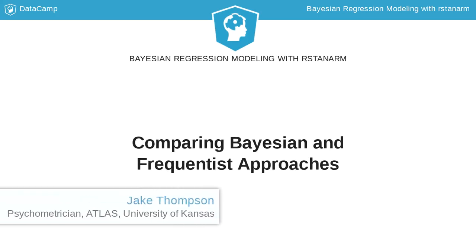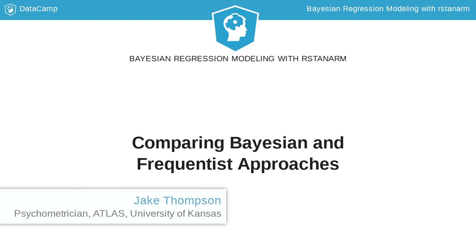You may have noticed in the last lesson that our estimates using the StanGLM function were very similar to our parameter estimates when using the LM function. If so, you're probably wondering why we need to even bother with Bayesian. We've touched on this a little bit, but it's worth taking some time now to really understand the differences between the frequentist and Bayesian camps.